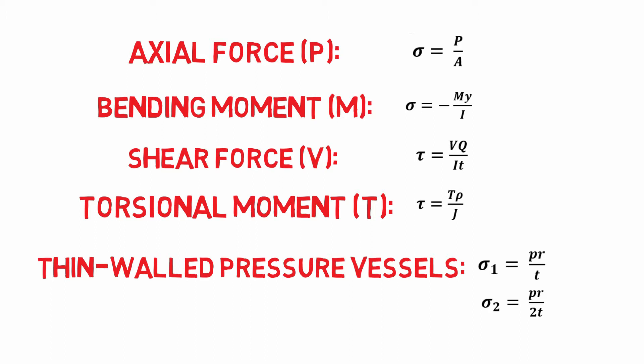If the vessel is thin-walled with spherical shape, then sigma 1 equals sigma 2 equals PR over 2T.